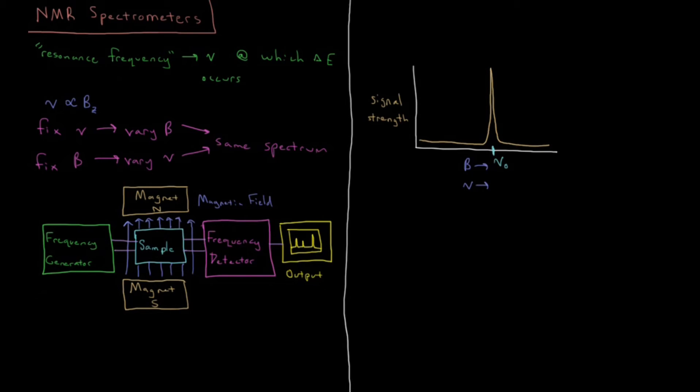So for reasons which we will discuss in later videos, the usual reference signal when you're doing H1 NMR spectroscopy, so just a bare proton by itself, the molecule which you use to generate this signal, this reference signal, is tetramethylsilane, also called TMS.